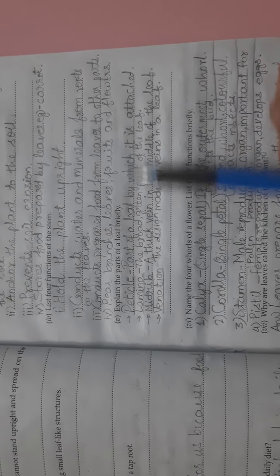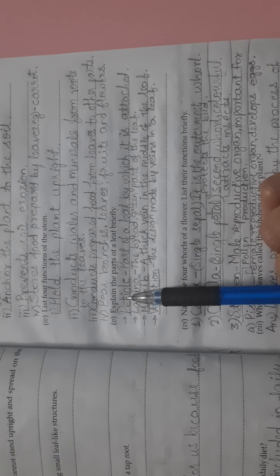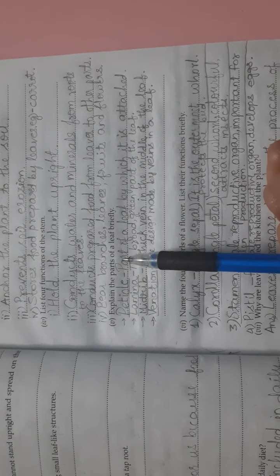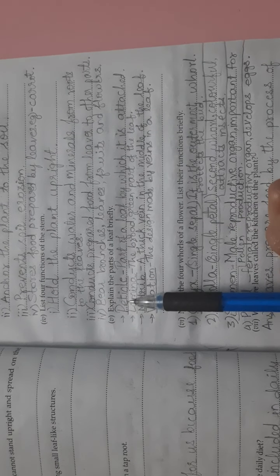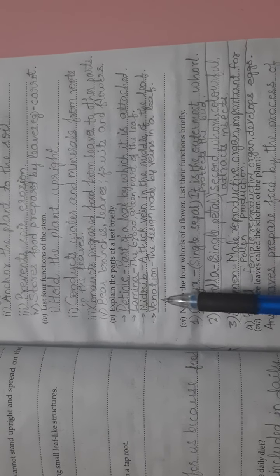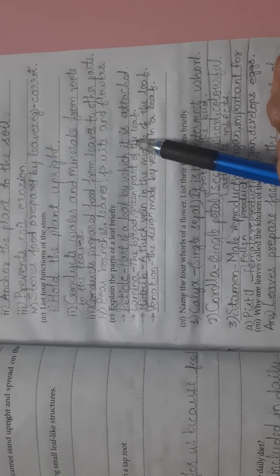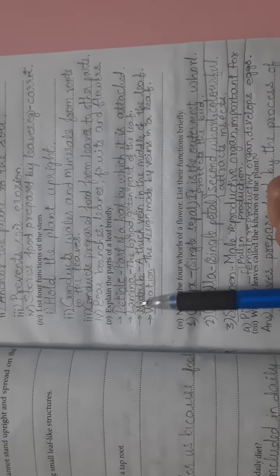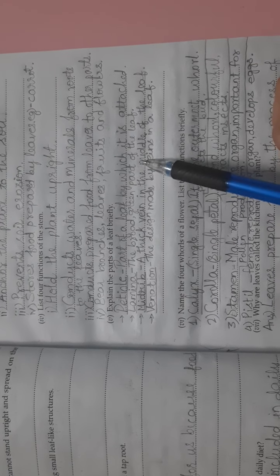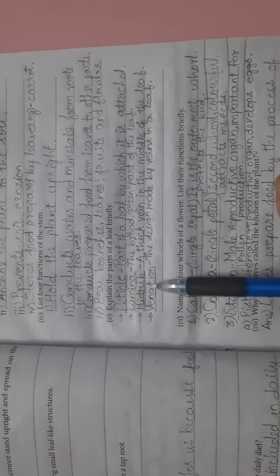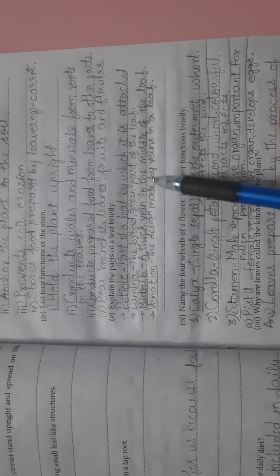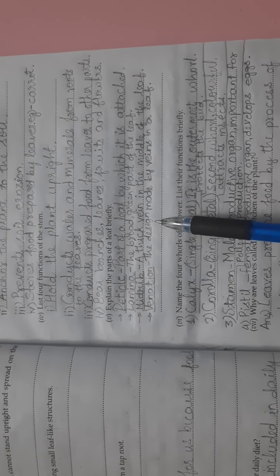The fifth question is, explain the parts of a leaf briefly. In a leaf we have petiole, lamina, midrib and venation. Petiole is part of a leaf by which it is attached. Lamina is the broad green part of the leaf. Midrib is a thick vein in the middle of the leaf.